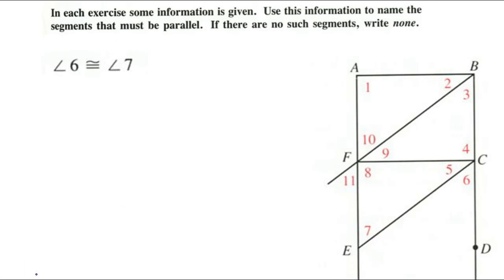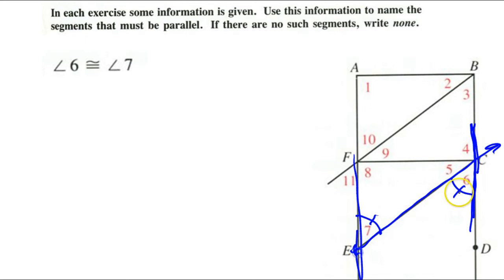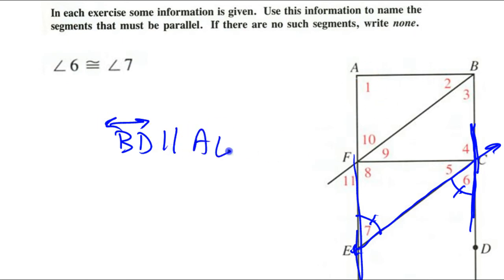How do we use these? Let's look at this example. Some information is given; use that information to name the segments that must be parallel. If there are no such segments, write none. So let's say we're given that angle 6 is congruent to angle 7. Well, those look like alternate interior angles between this line and that line with that transversal. And if alternate interior angles are congruent, that means line BD must be parallel to line AE.